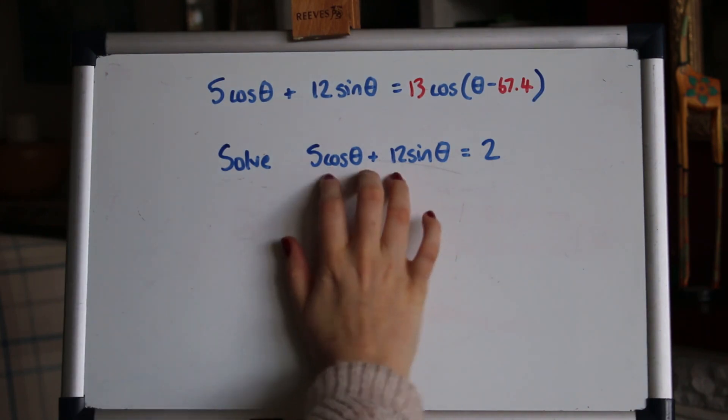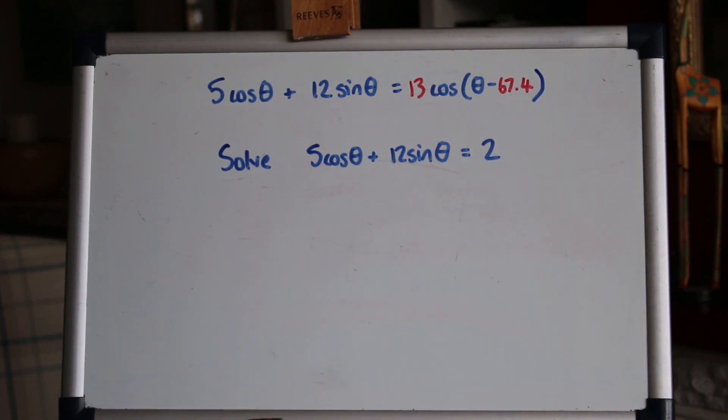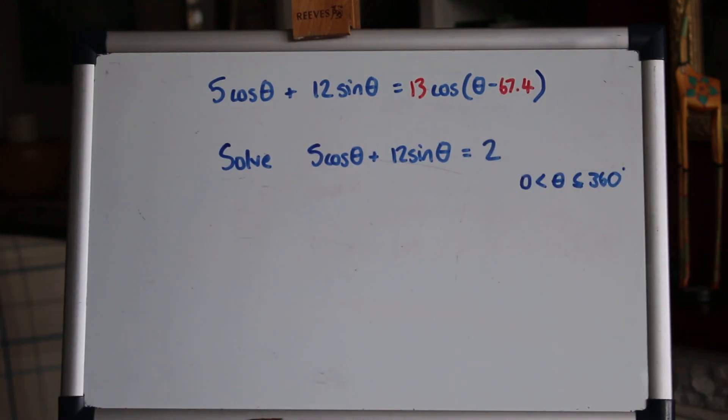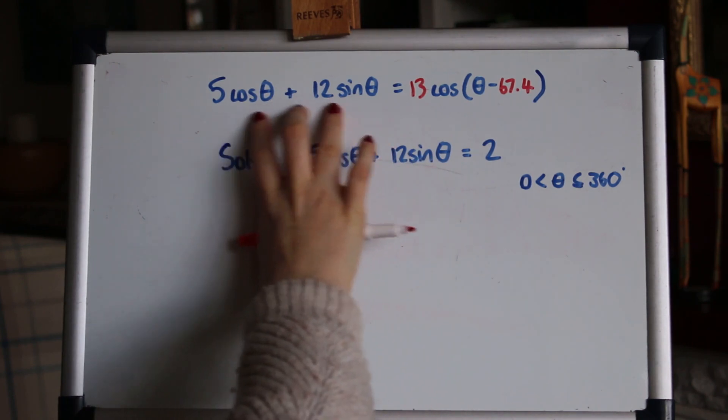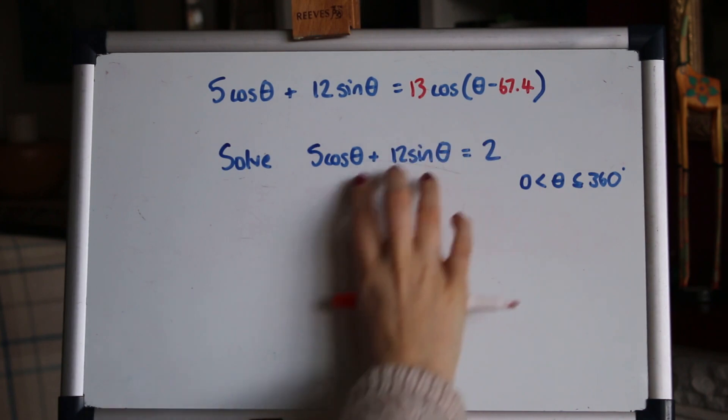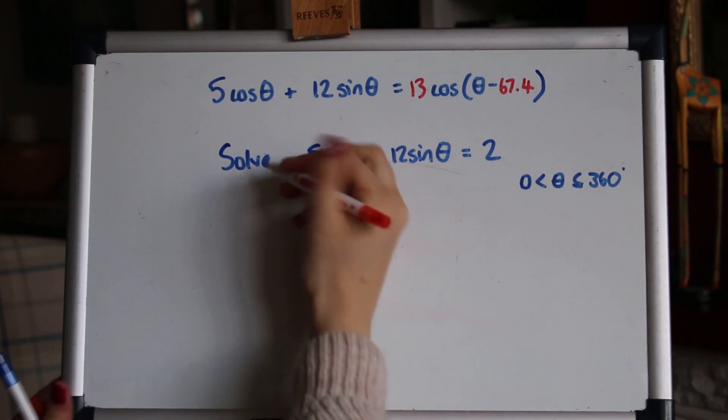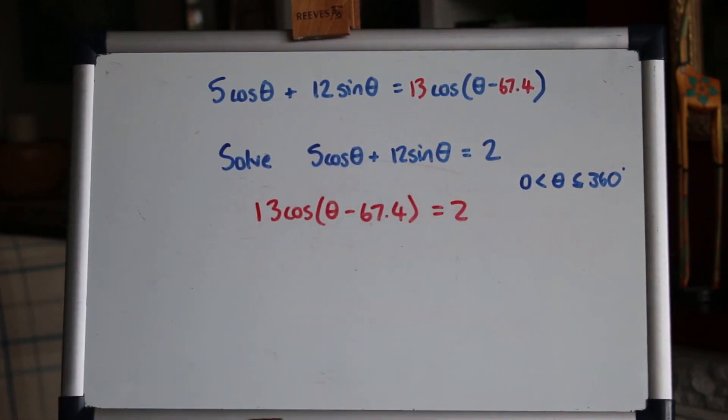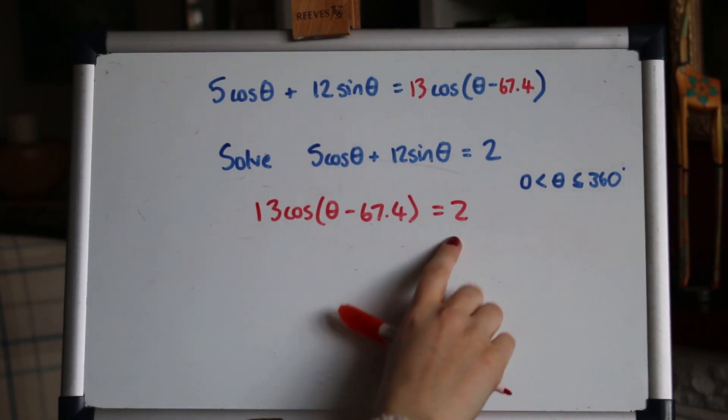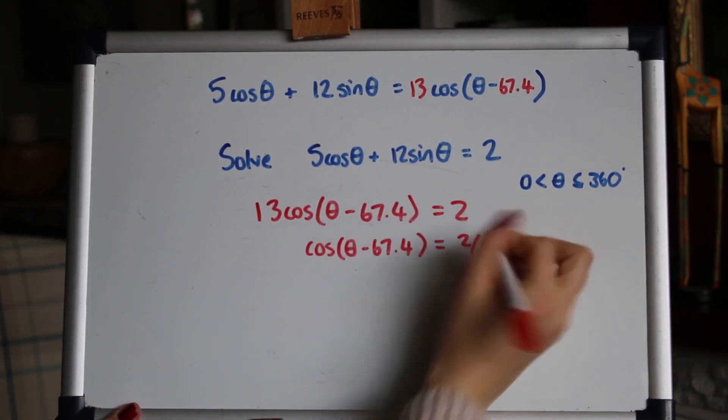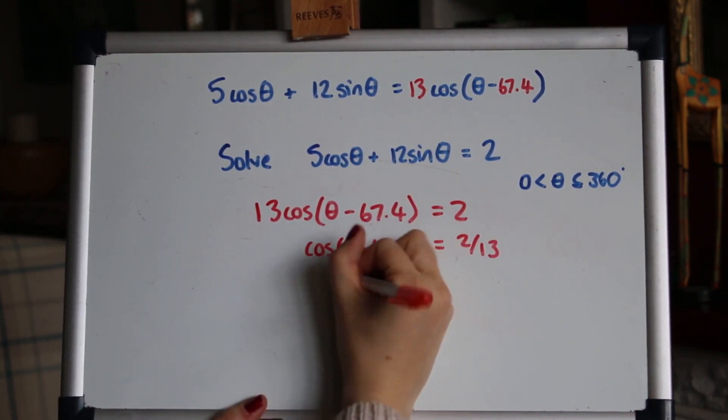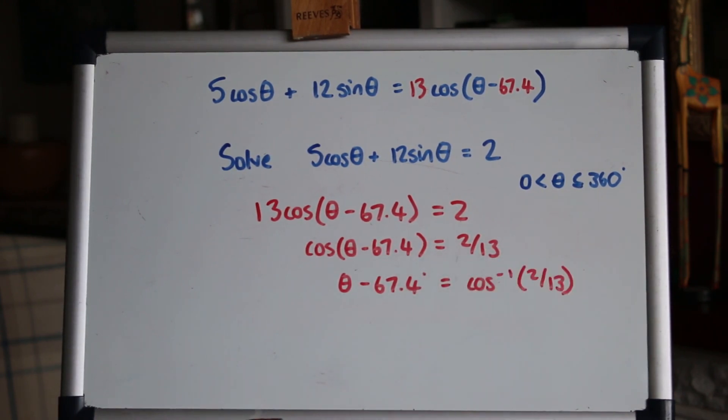The next part is to solve then this equals 2. Oh, and I should have written the range as well. It's 0 up to 360. So again, we know we're working in degrees. And the way to do this is, in the first part you've done all this work to write it in this form. So clearly you're not going to use that. You're going to use the new form, equal to 2 instead. And now that looks a lot friendlier to solve, because now you can move the 13 onto the other side. And inverse cos.